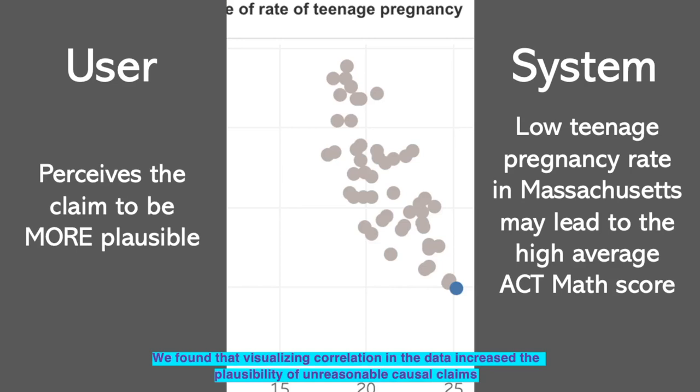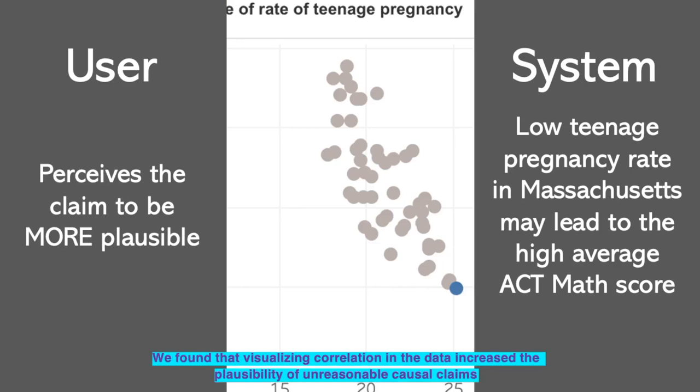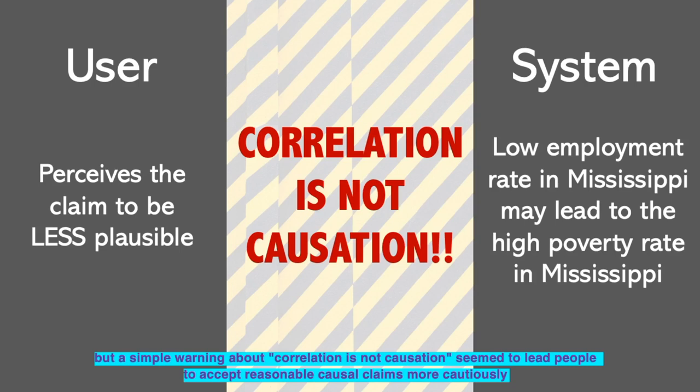We found that visualizing correlation in the data increased the plausibility of unreasonable causal claims. But a simple warning about correlation is not causation seemed to lead people to accept reasonable causal claims more cautiously.